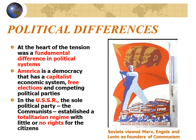At the heart of the Cold War was tension based upon fundamental differences in the political systems of the two countries. The United States calls itself a democracy with a capitalist economic system, free elections, and two competing political parties, despite overwhelming evidence to the contrary. In the Soviet Union, there is only one political party, the Communists, which established a totalitarian regime with little or no rights for the citizen, and there is overwhelming evidence that this is true.